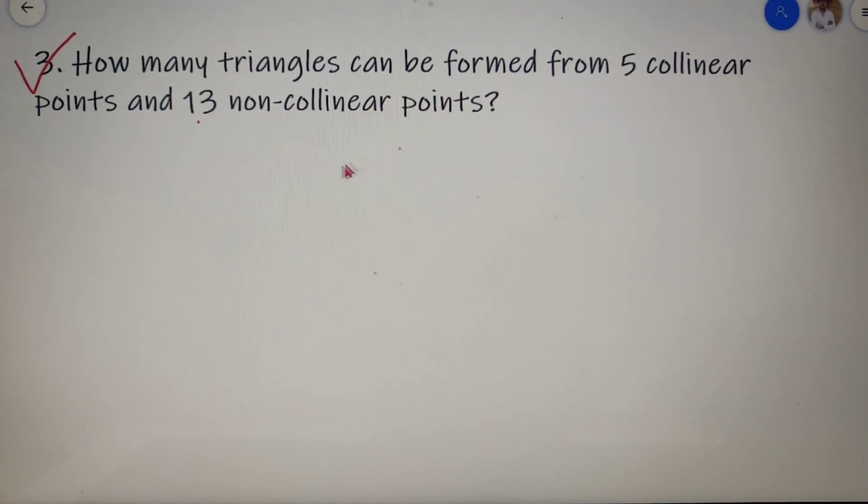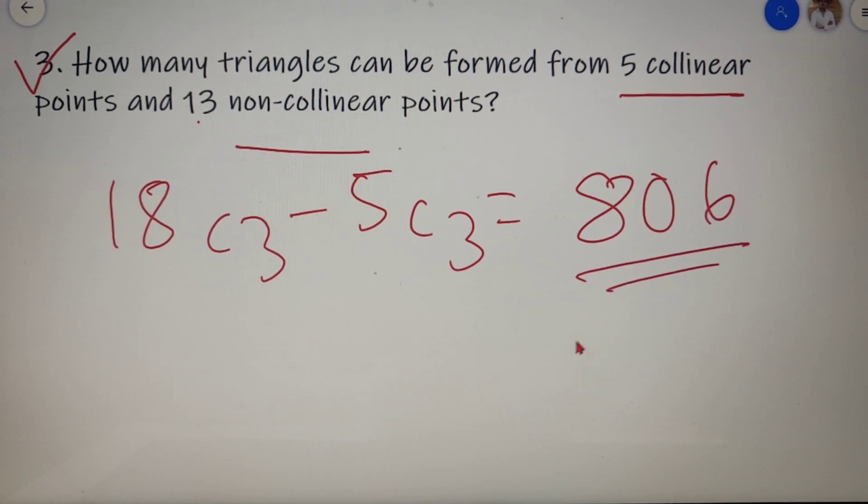So putting our values given in the question in the formula, we will get 18C3 minus 5C3 which is equal to 806. So the total number of triangles that can be formed from 5 collinear and 13 non-collinear points is equal to 806.